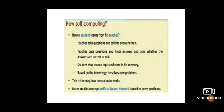Let's take another example to understand these concepts. How does a student learn from a teacher? The teacher asks questions, provides hints, and checks whether the answers are correct or not. The student learns the topic and stores it in memory. Based on that knowledge, the student can solve new problems. This is how the human brain works — and this is the basis of how neural networks are inspired by the human nervous system.